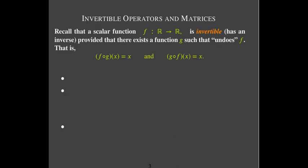We have this idea of composition — that means chaining these functions together. If x is the input, g does something to x, but then f undoes that, so you get x back again. And f and g undo each other: if you start with x, f does something to x, g undoes that, and you get x back again.